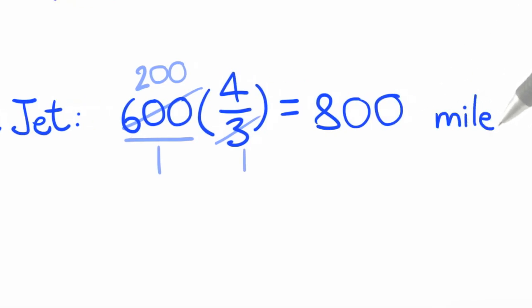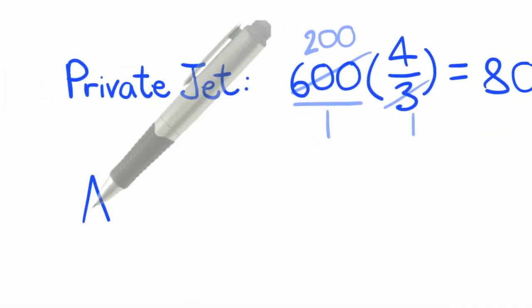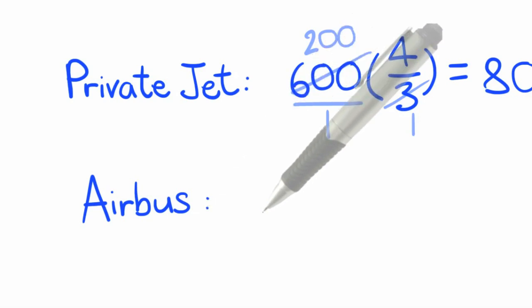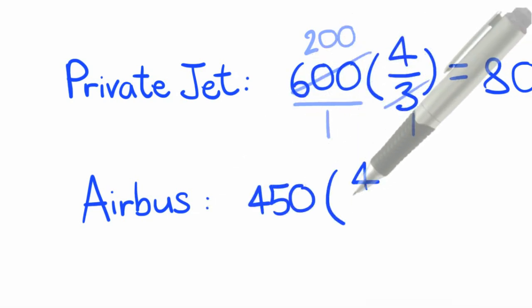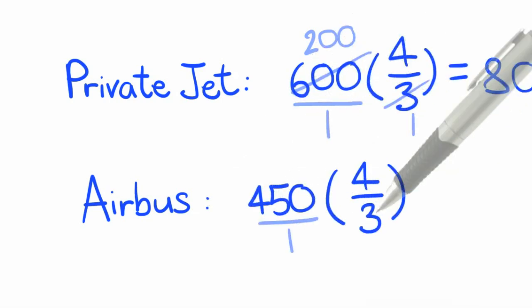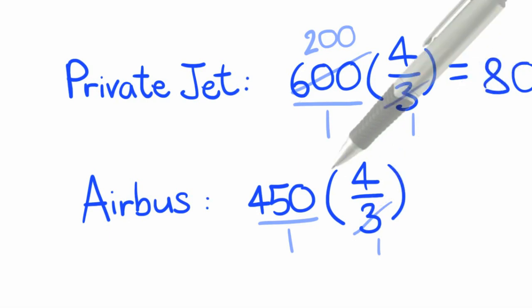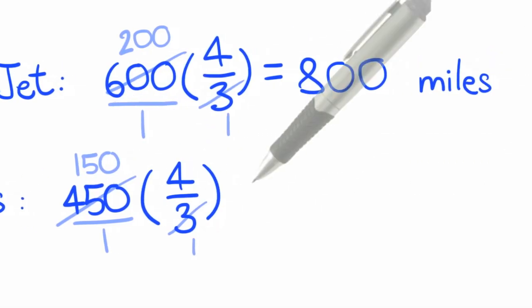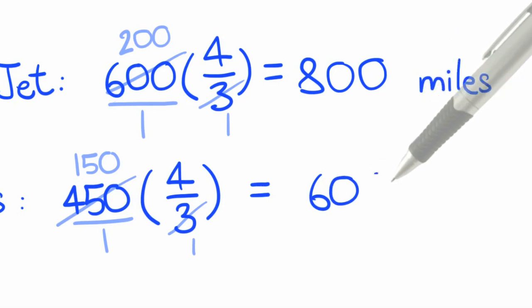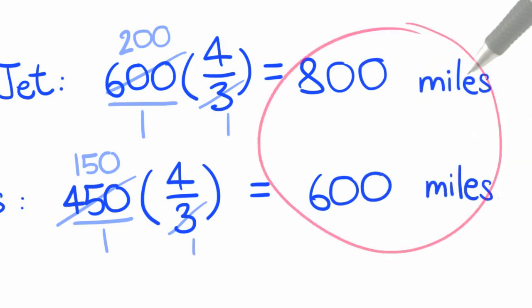The Airbus, same process. 450 times 4 thirds. Put 1 underneath 450, cross-cancel. 3 will go into itself 1 time, 450 goes 150 times. Multiply across: 150 times 4 is 600. So 600 miles for the Airbus. This makes sense because the sum of the two distances is 1,400 miles.